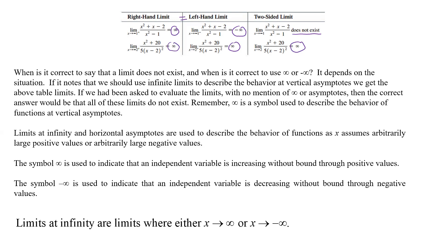Limits at infinity and horizontal asymptotes are used to describe the behavior of functions as X assumes arbitrarily large positive or large negative values. The symbol positive infinity indicates that an independent variable is increasing without bound through positive values. The symbol negative infinity indicates the independent variable is decreasing without bound through negative values. So limits at infinity are always either X goes to positive or negative infinity — X going to positive infinity one way, and X going to negative infinity the other way.